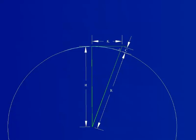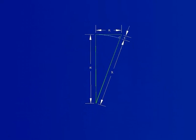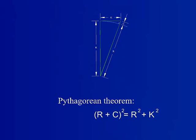Using Pythagorean theorem, we can relate the curvature error, c, to the radius of the Earth, r, and the horizontal distance, k.